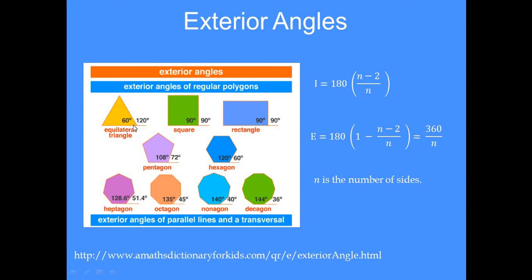For a square it is 90 and 90. For a pentagon it is 108 degrees interior angle and 72 degrees exterior angle. Now this angle is called the exterior angle. You don't need to, you will learn this sometime or the other.